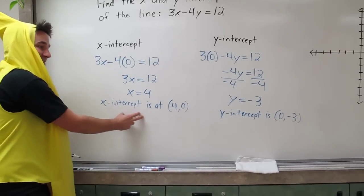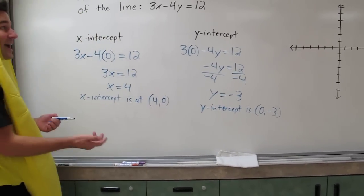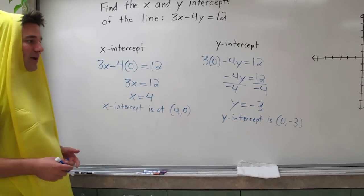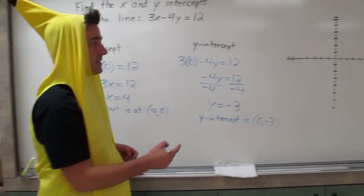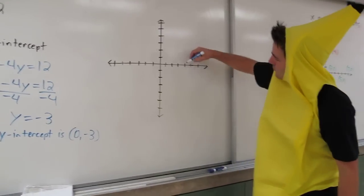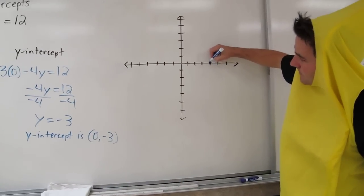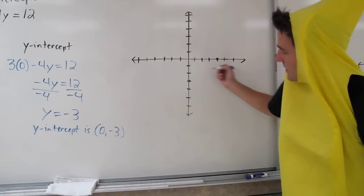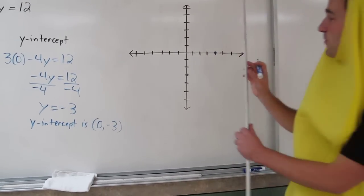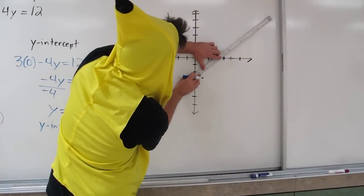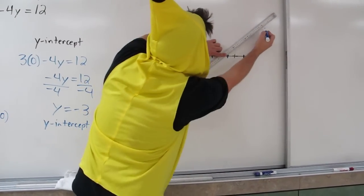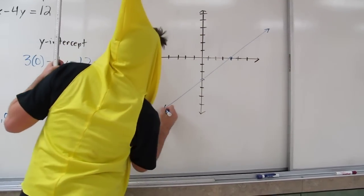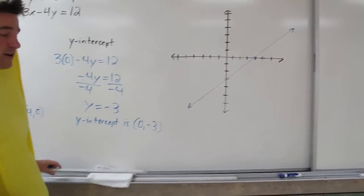Now, using our x-intercept and our y-intercept, we can actually quickly graph this line. We just need to graph the point 4, 0 and the point 0, negative 3. So 4, 0 — our x-intercept — is right here, and 0, negative 3 — our y-intercept — is right here. All we have to do is connect those points, and there's a graph of our line.